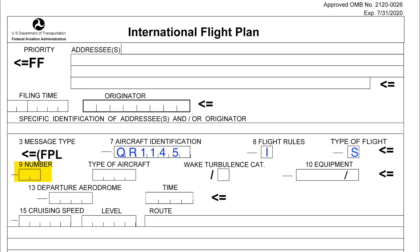So let's move on to item 9. This item is related to formation flying. Usually we do not fly in formation, so we leave it blank. If we were to fly in formation, however, say three aircraft, we put in 02, meaning the primary airplane plus two accompanying aircraft. Next is the type of aircraft. Make sure when inserting the type of aircraft you are flying that you are complying with the ICAO aircraft type codes or designators. For example, the Airbus A350-900 goes in like A359, or Diamond DA42 goes in like DA42, and so on.